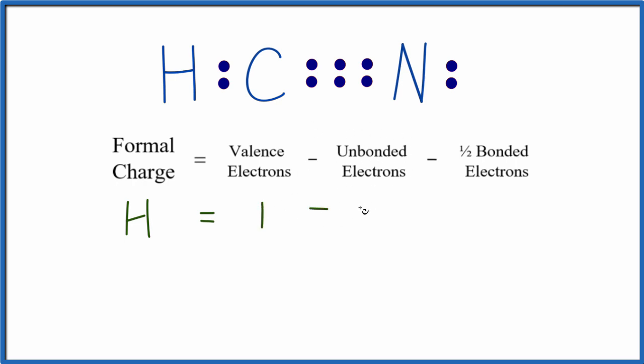Unbonded electrons are the electrons that aren't involved in chemical bonds. For hydrogen, these are all bonded with the carbon here, so we have zero unbonded electrons. Then one-half of the bonded electrons.